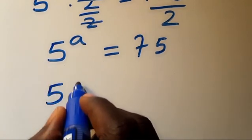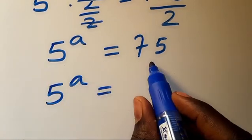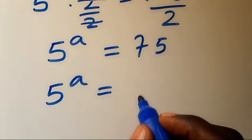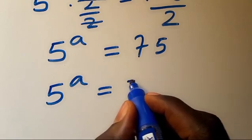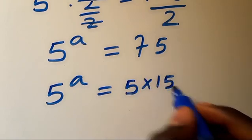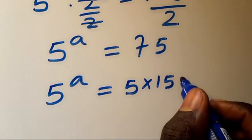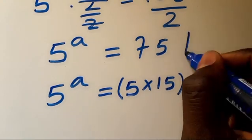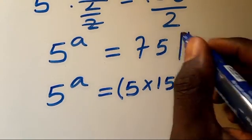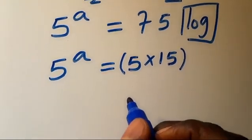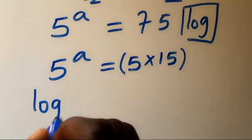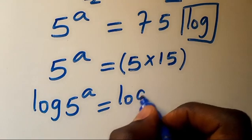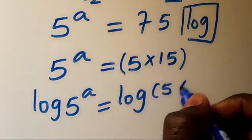From here we have 5 to the power of a equals 75. We can express 75 as the product of 5 multiplied by 15. Now let's introduce log to both sides: log of 5 to the power of a equals log of 5 multiplied by 15.